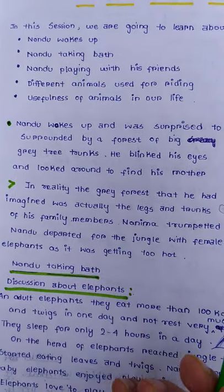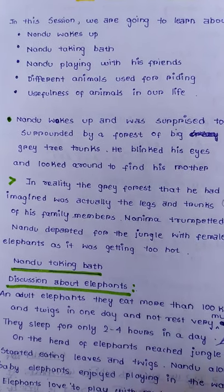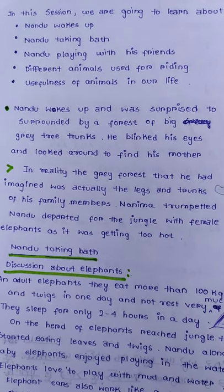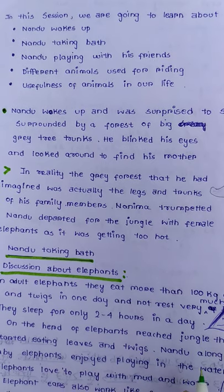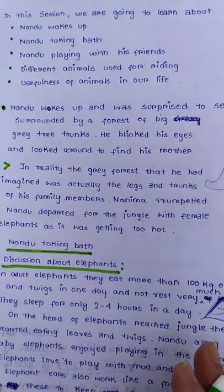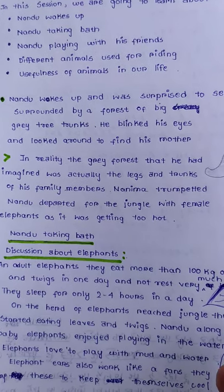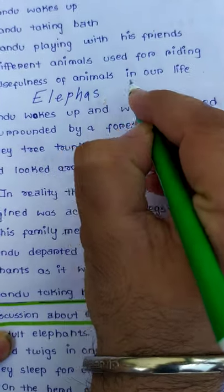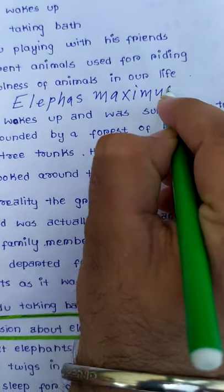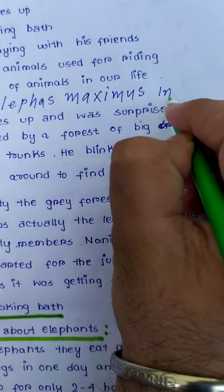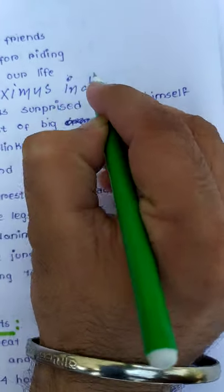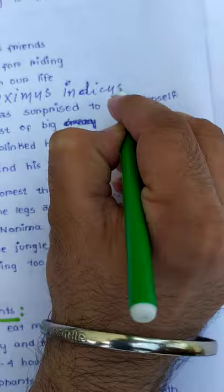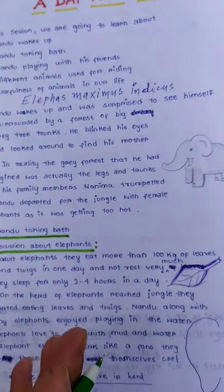We will also discuss different animals used for riding, and the useful role of animals in our life. Before that, one important thing — the scientific name of the Indian elephant. The scientific name of the Indian elephant is Elephas maximus indicus. Please note it down.